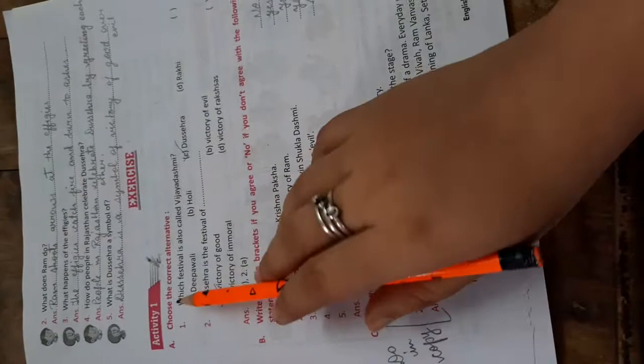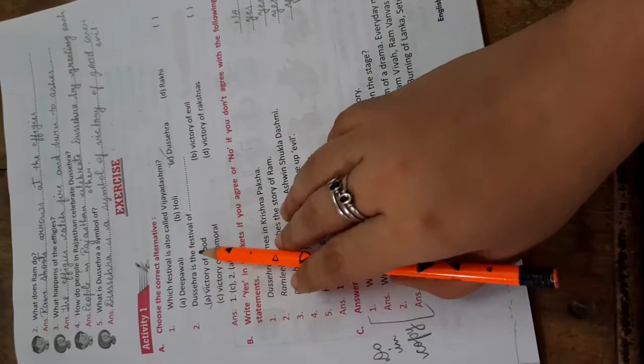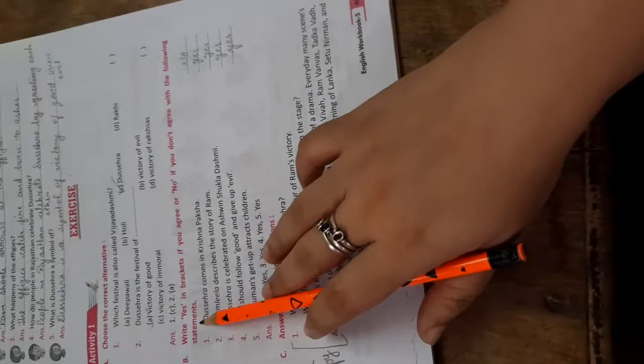Now come to exercise. Activity 1. Choose a correct which festival is also called Vijay Dashmi. Dashera. Dashera is the festival of victory of good.